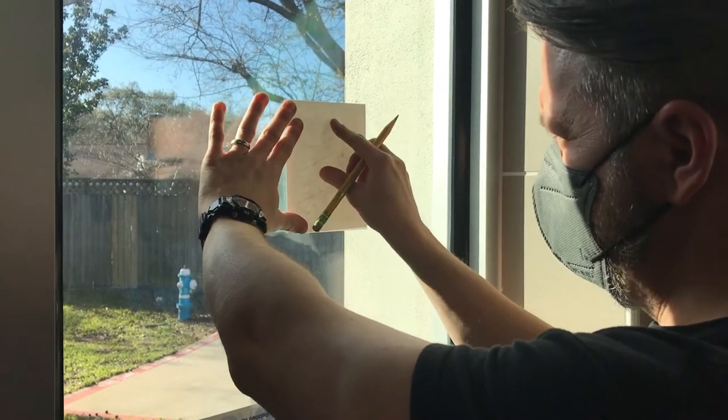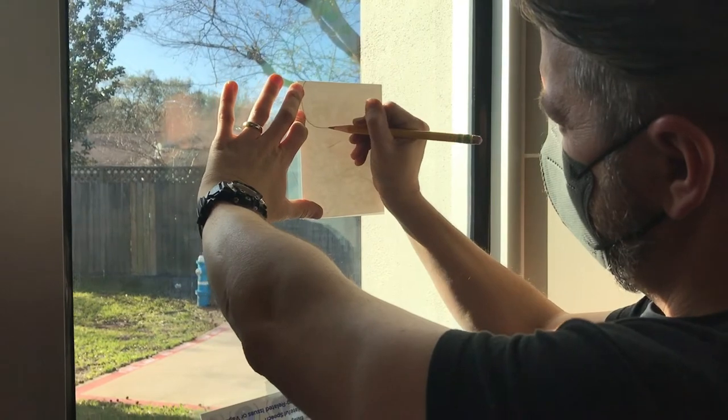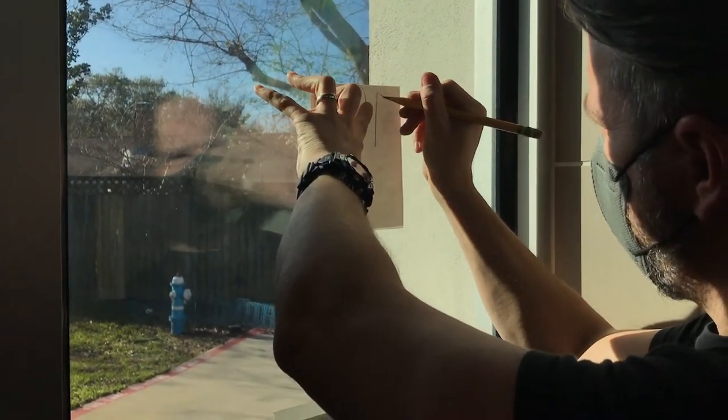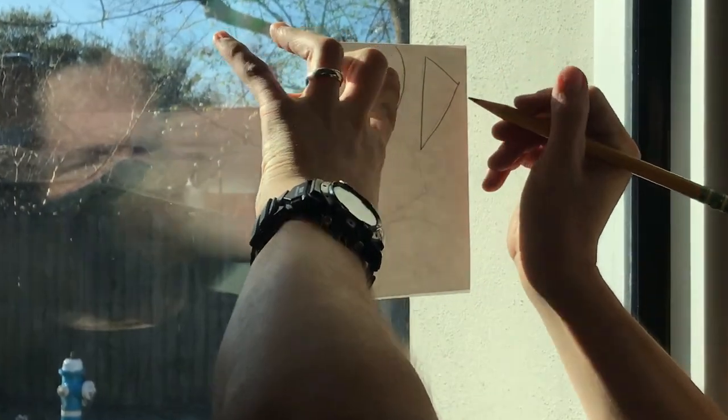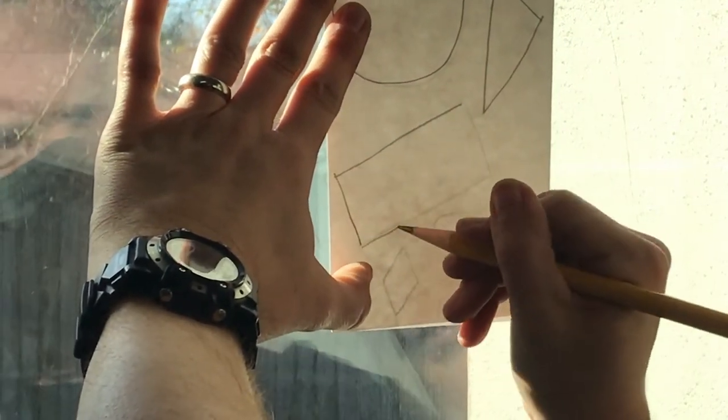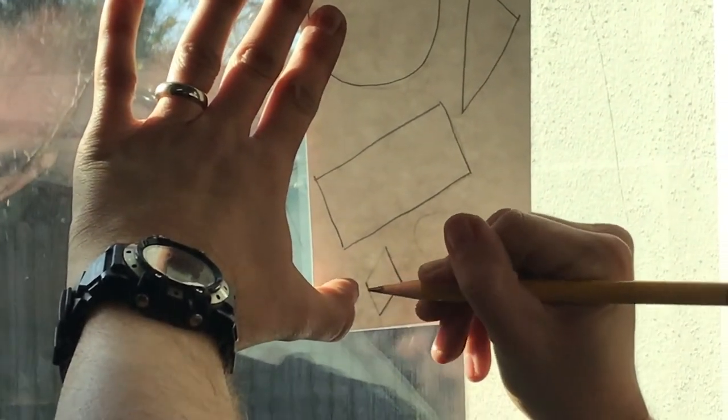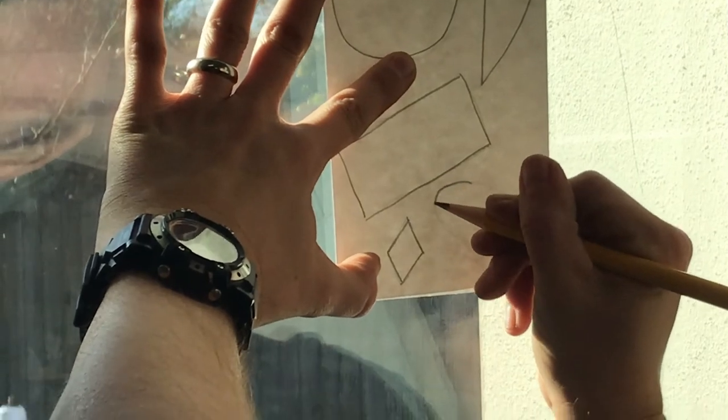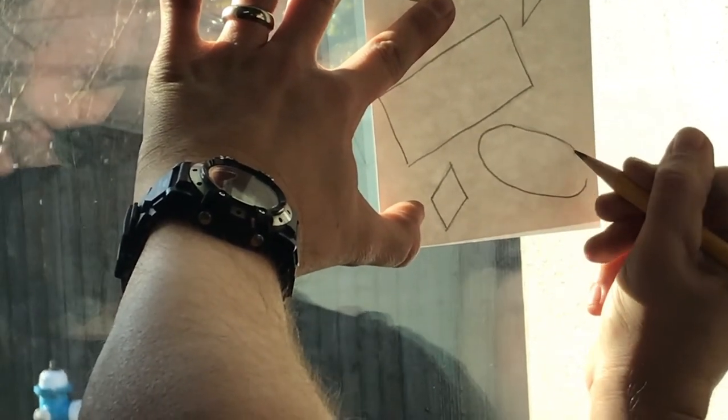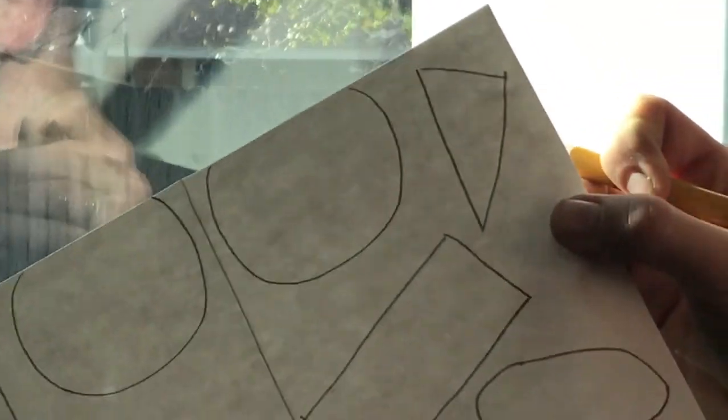And I don't know if you can tell, but I can see through my paper to trace it. It's going to draw the same shapes again, but on the other side of the paper. Look at that. Symmetrical.